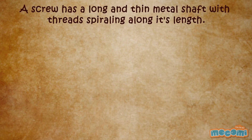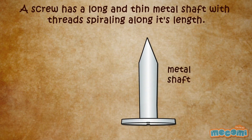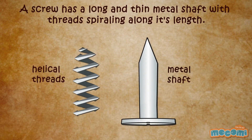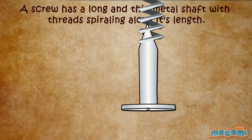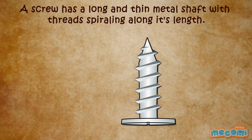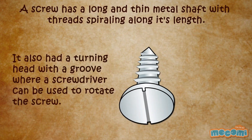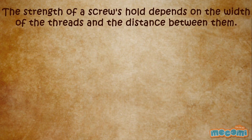A screw has a long and thin metal shaft with threads spiralling along its length. It also has a turning head with a groove where a screwdriver can be used to rotate it.